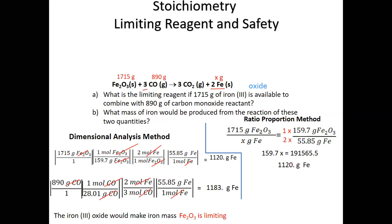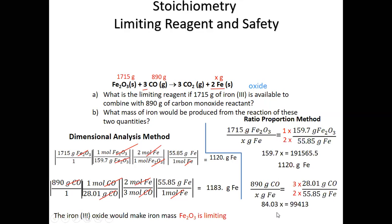Ratio-proportion for CO: given 890 grams of CO over x grams of Fe. Right-side fraction uses molar mass 28.01 g for CO and 55.85 g for Fe. Mole coefficients: 3 for CO on bottom, 2 for Fe on top. Cross-multiply: 3 × 28.01 × x = 890 × 2 × 55.85. Divide each side by 84.03 to get 1183 grams of iron.